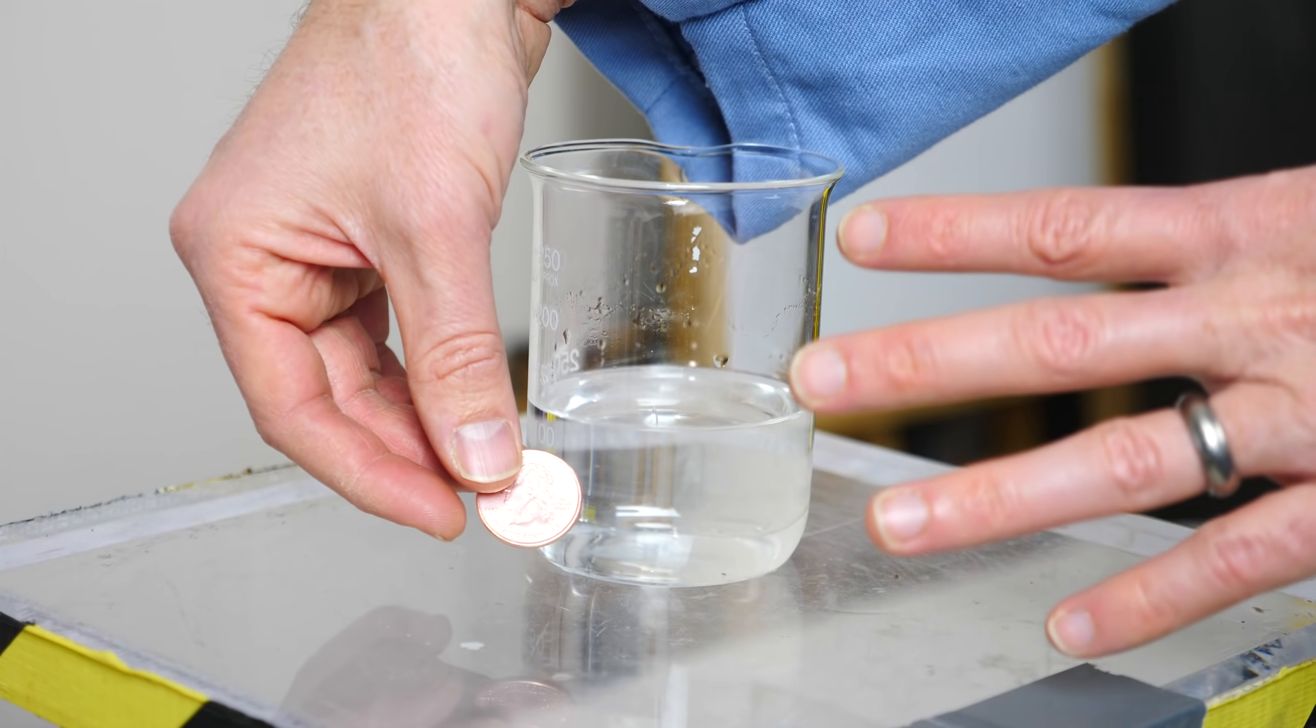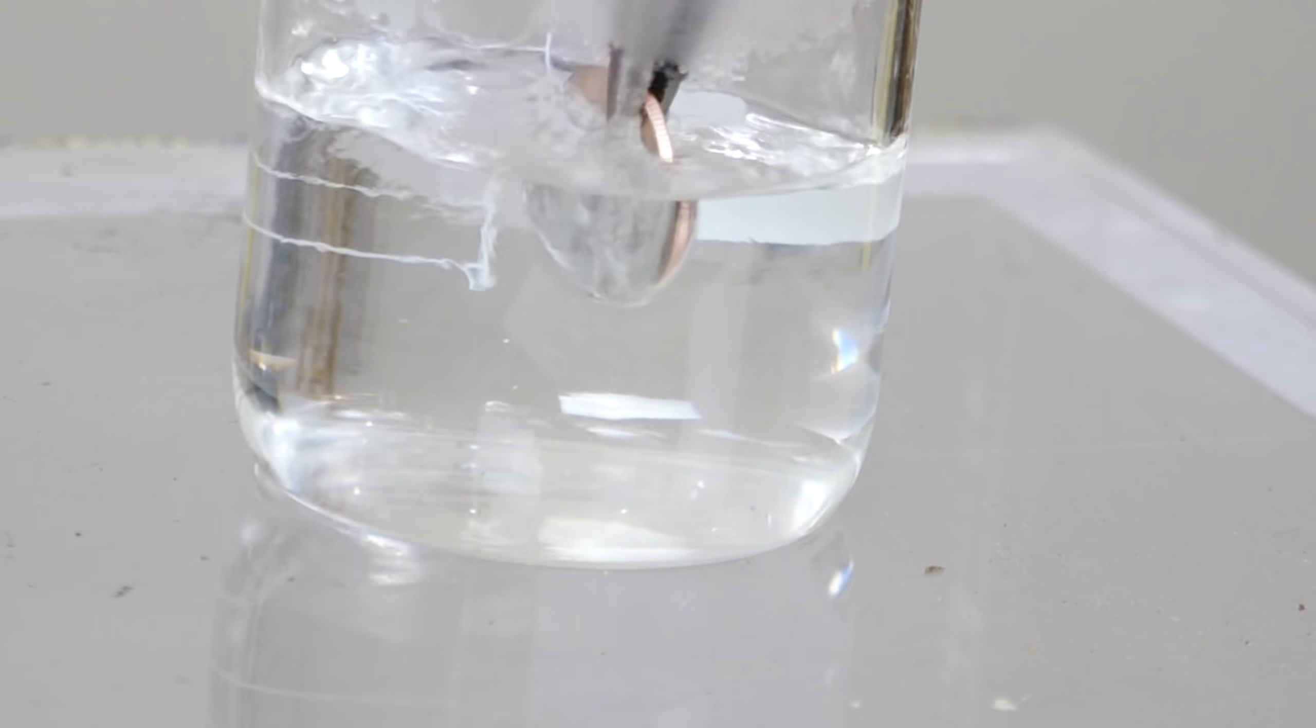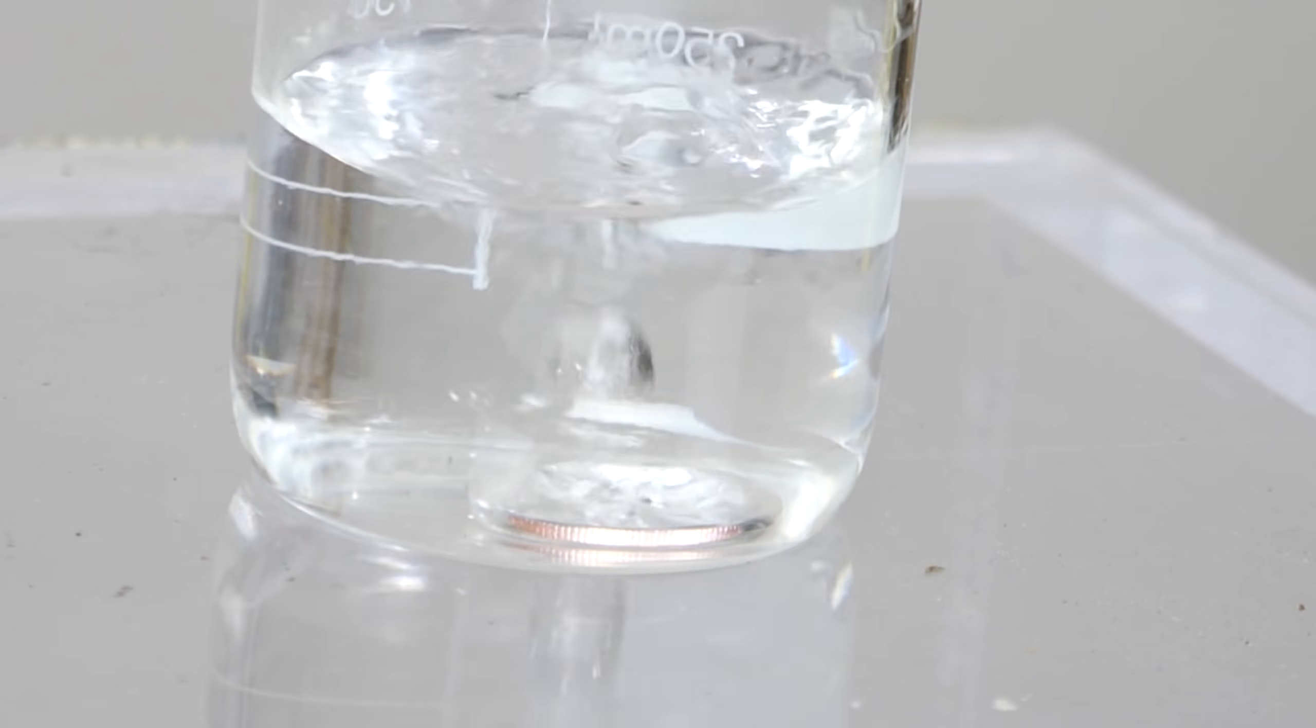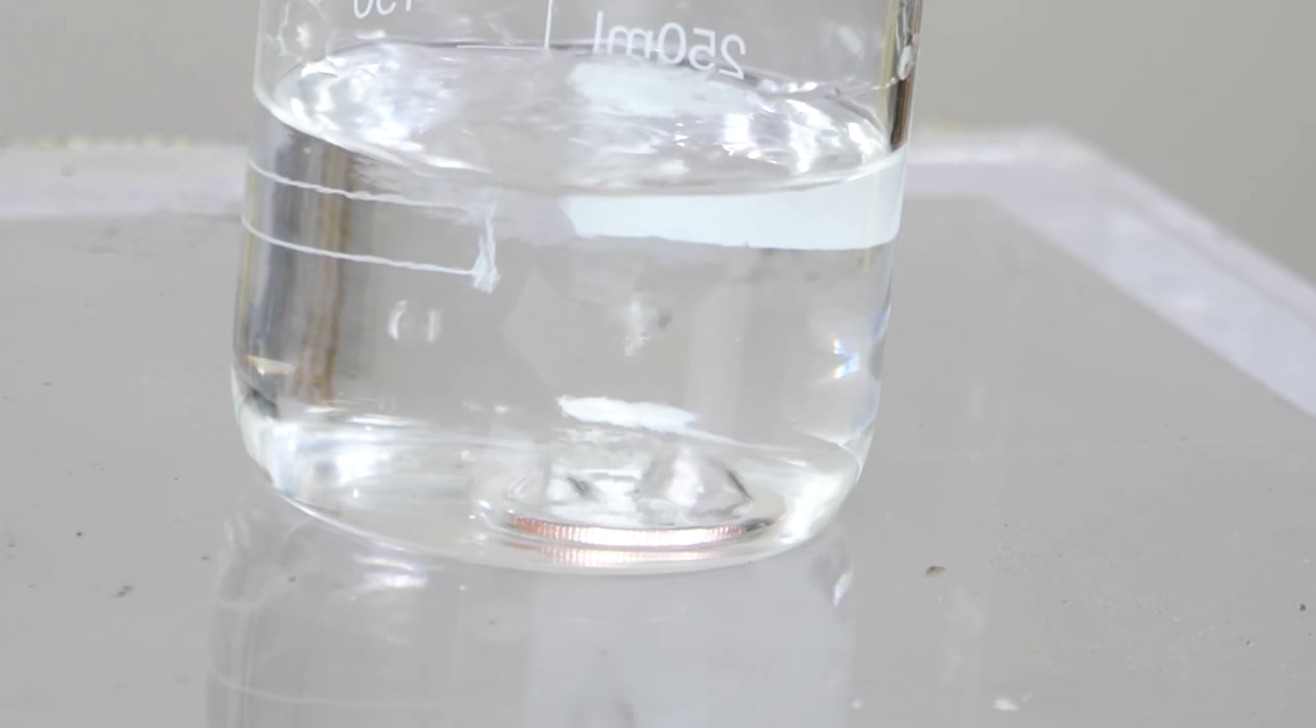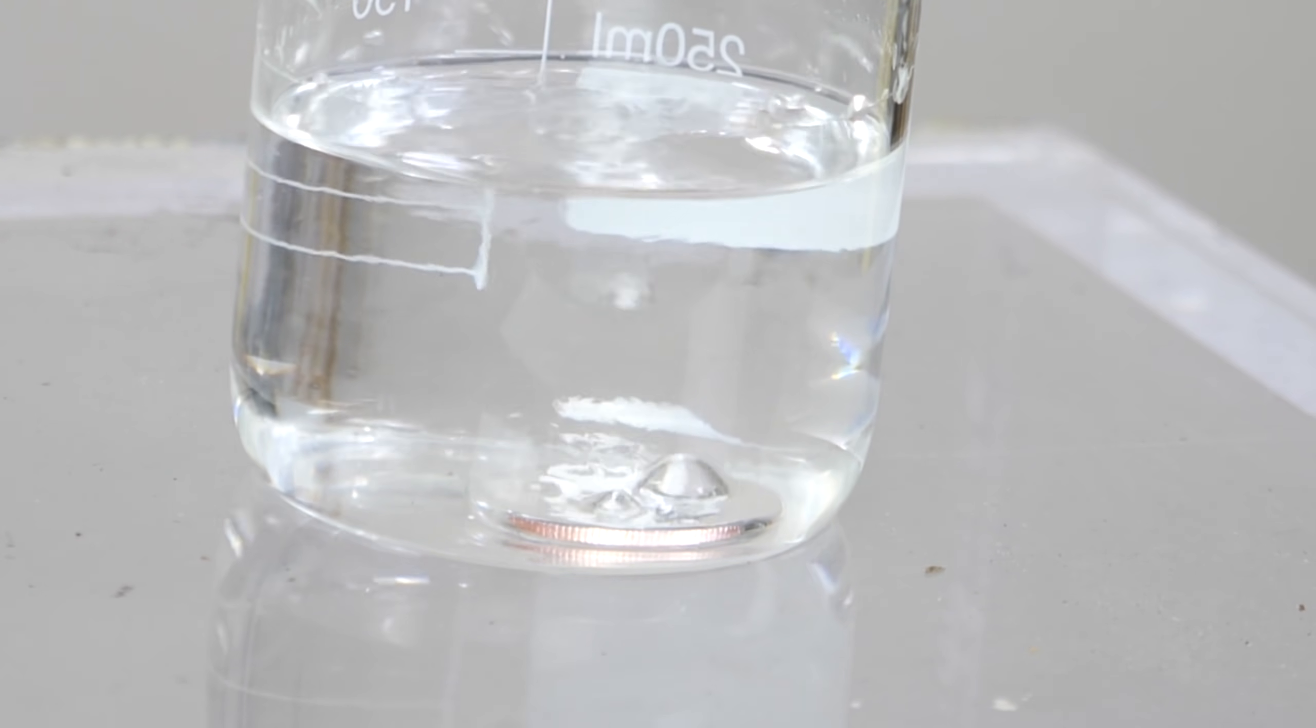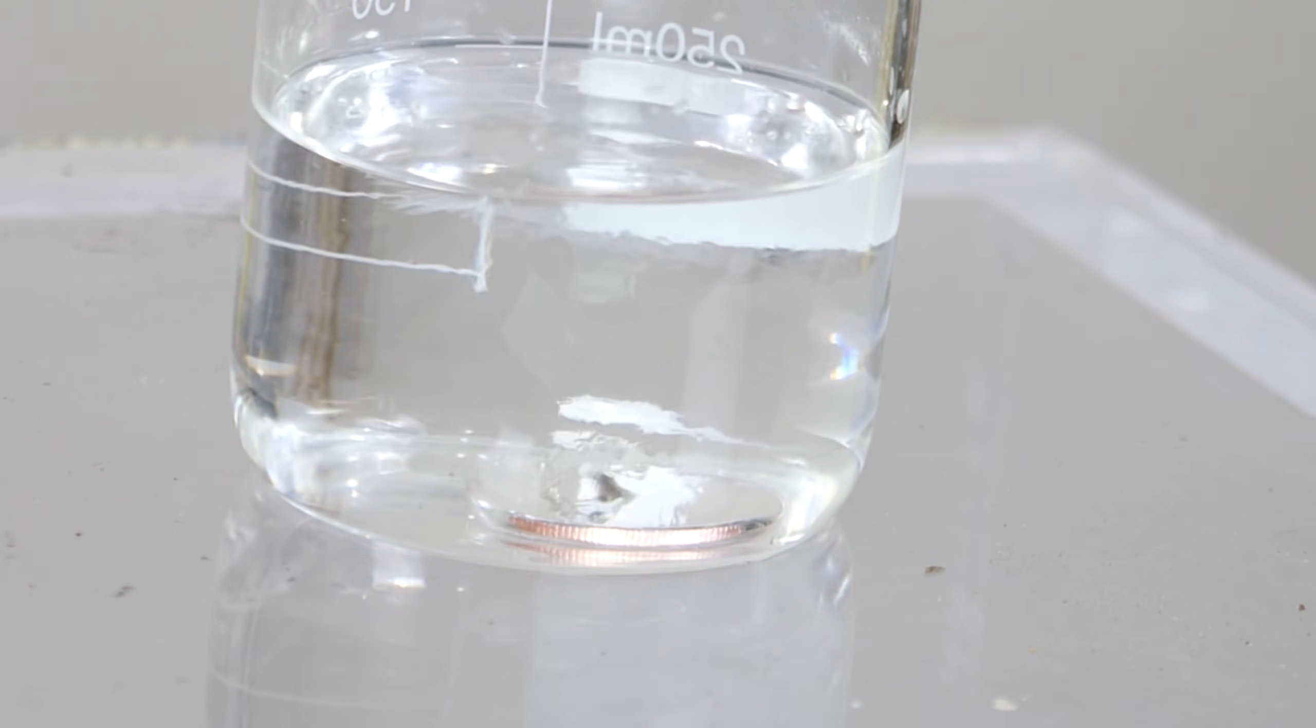So you kind of see two boilings happening. The first is due to the Leidenfrost effect, and then the next is due to the actual boiling of the alcohol once the quarter cools. So that shininess on the quarter was actually a thin layer of gas.